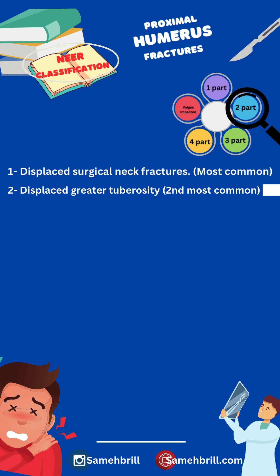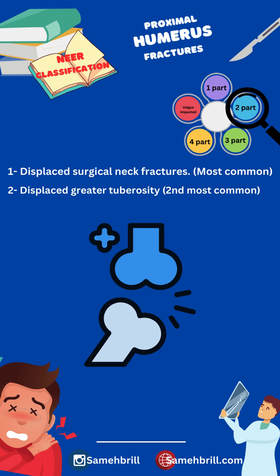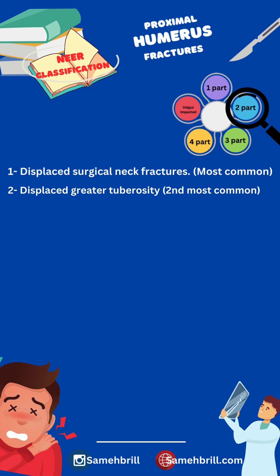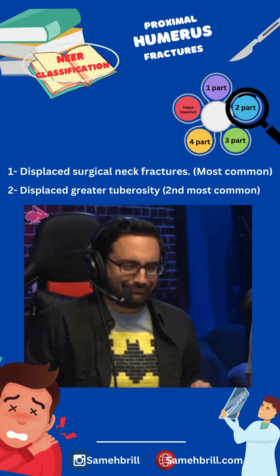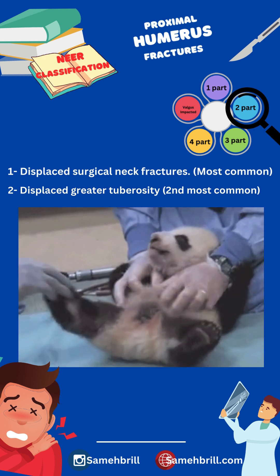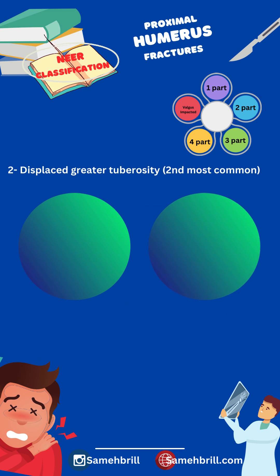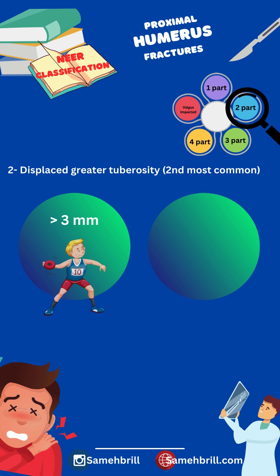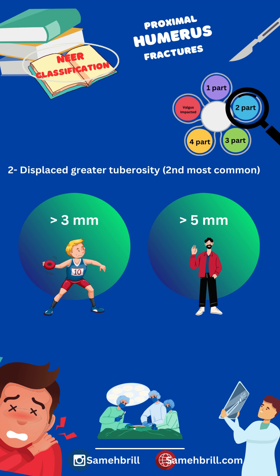Moving on to displaced greater tuberosity fracture — it's the second most common two-part fracture pattern and is commonly seen after anterior shoulder dislocation. Greater tuberosity fractures are more special than other fracture patterns: if the greater tuberosity is displaced more than 3 mm in overhead athletes, or greater than 5 mm in healthy adults, surgical fixation is required.